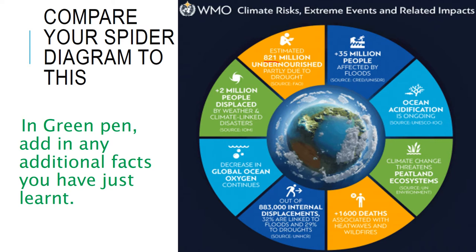121 million undernourished people — that means they haven't had enough to eat. Their bodies aren't getting the vitamins and minerals they need, and this is partly due to drought. Drought affects farmers and their ability to produce food. So if you rely on farming, or if you're living in a poorer part of the world where the cost of food is one of your biggest concerns, climate change is likely to really negatively affect you.